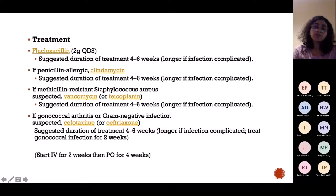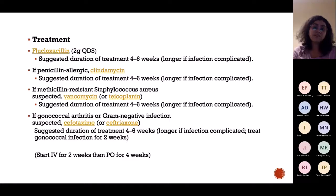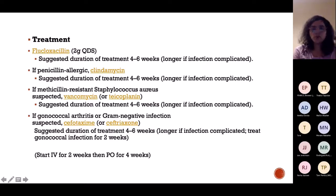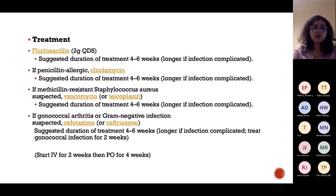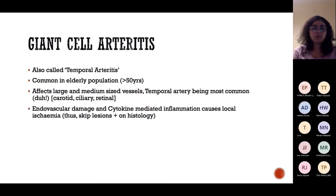We start with a very high dose of antibiotics in septic arthritis because the infection has reached the joint — a big deal. We start with IV antibiotics, 2 grams QDS — that is 2 grams every 6 hours IV — then switch to oral route. The overall treatment lasts around 6 weeks. If the patient has penicillin allergy, give clindamycin. For MRSA, give vancomycin or teicoplanin, but peripheral access is needed first.